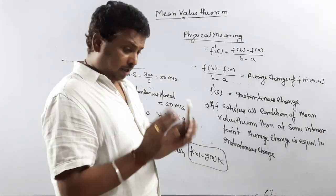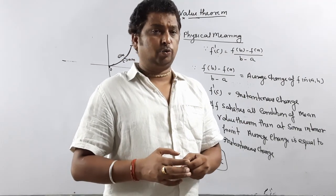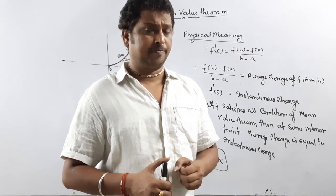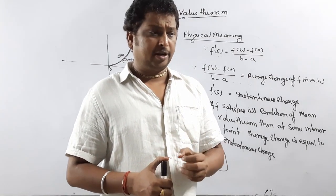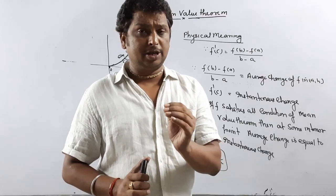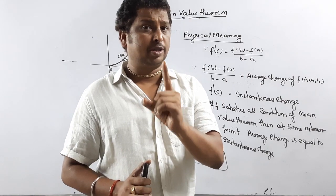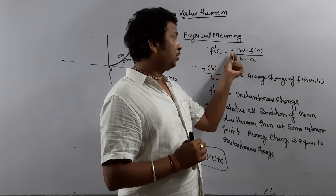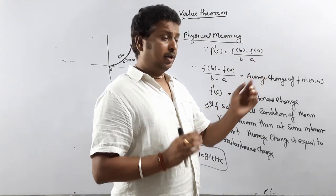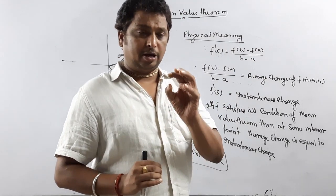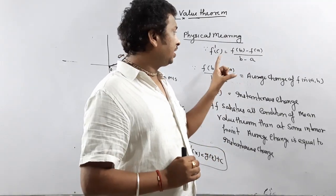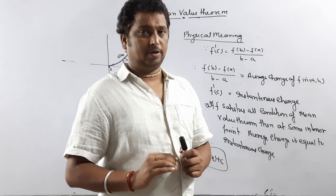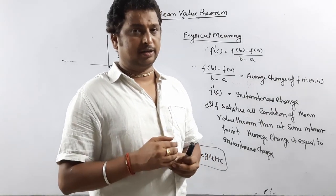Now I am going to explain how to verify the Mean Value Theorem. The procedure is very similar to Rolle's theorem. First confirm the function is continuous and differentiable on the given interval. Then use the formula f'(c) = (f(b) - f(a)) / (b - a) and calculate the value of c. If the value of c lies between a and b, the Mean Value Theorem is verified; otherwise it is not.